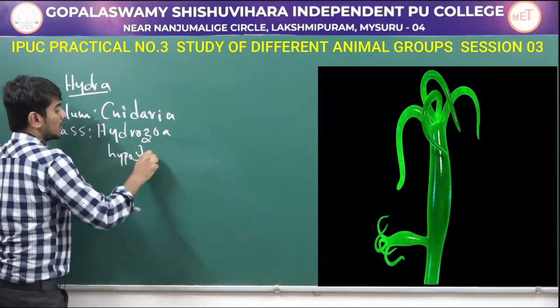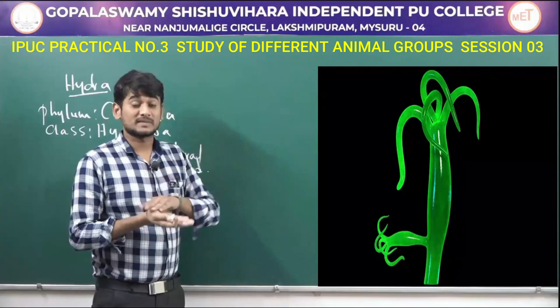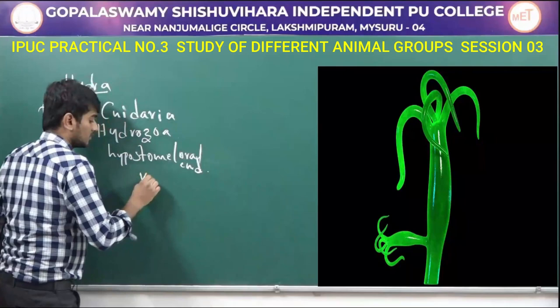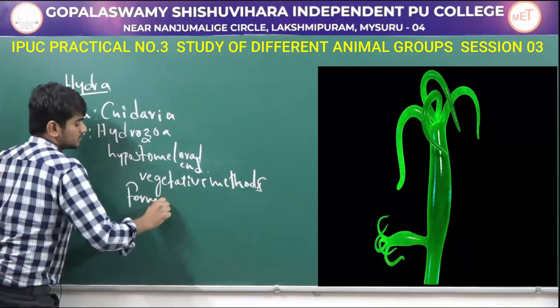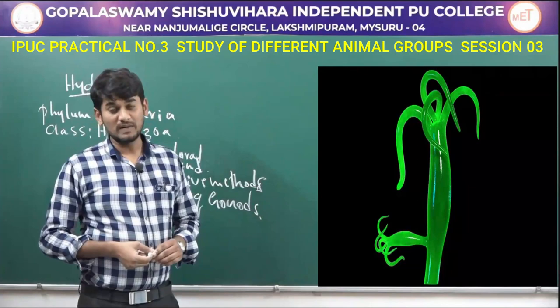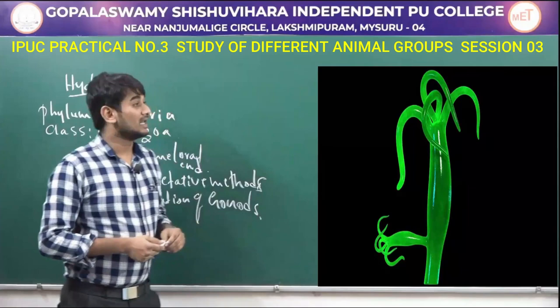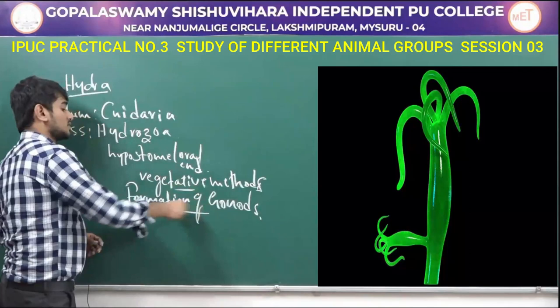The hypostome is the oral end. The aboral end is flat for attachment to the substratum, which is called the basal disc. Reproduction takes place through vegetative methods or by formation of gonads. Hydra comes under phylum Cnidaria and class Hydrozoa.